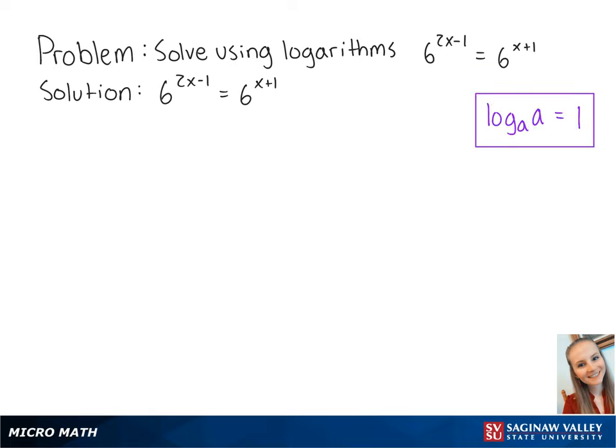Using the following property, we're going to want to take the log of base 6. So we get log base 6 of 6 to the 2x minus 1 equals log base 6 of 6 to the x plus 1. To bring down the exponents,